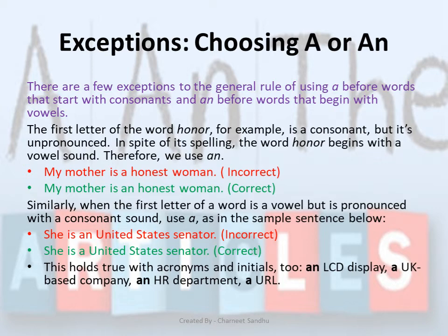Similarly, when the first letter of a word is a vowel but is pronounced with a consonant sound, use 'A'. For example: 'She is a United States Senator.' This also holds true with acronyms and initials — like 'an LCD display', 'a UK based company', 'an HR department', 'a URL', etc.